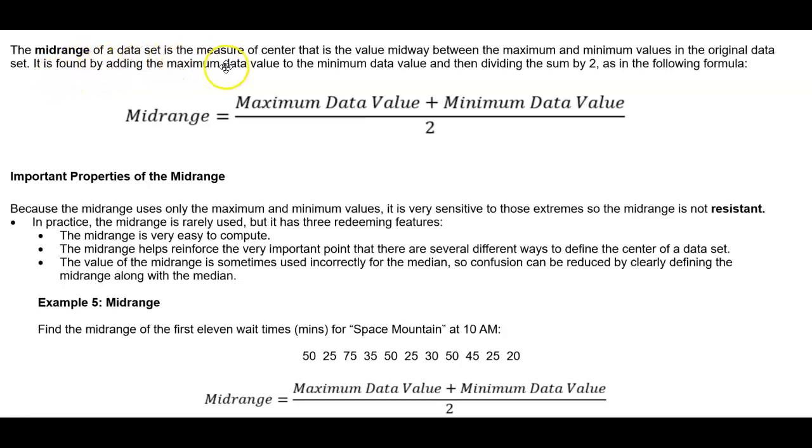The midrange of a data set is the measure of center that is the value midway between the maximum and minimum values in the original data set. It is found by adding the maximum data value to the minimum data value and then dividing the sum by 2, as in the following formula: Midrange equals maximum data value plus minimum data value divided by 2.